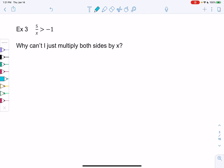Section 1.1, Example 3. We have 5 over x is greater than negative 1. I think the temptation would be to multiply by x, but let's talk about why that's not allowed.